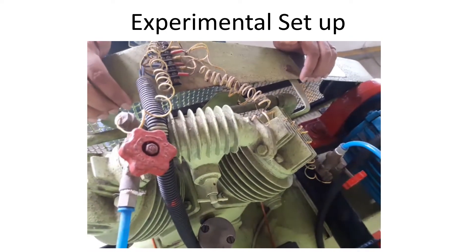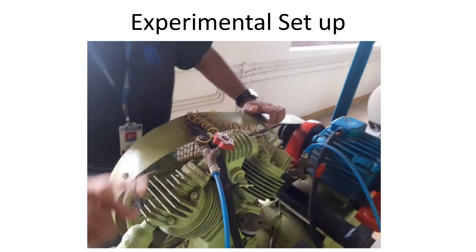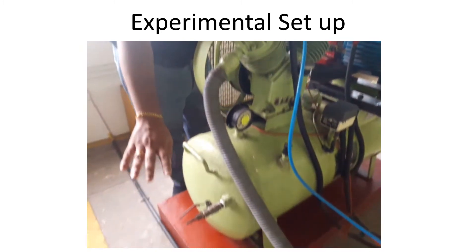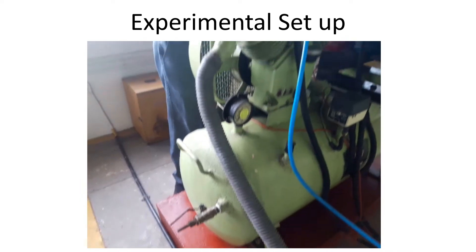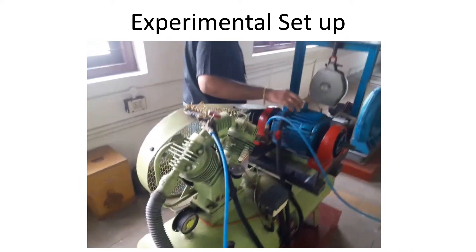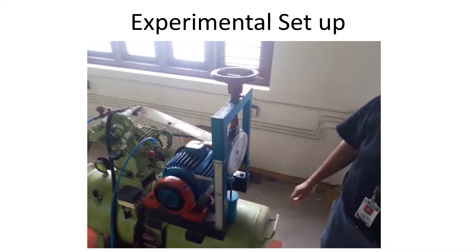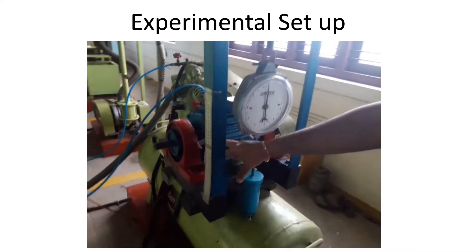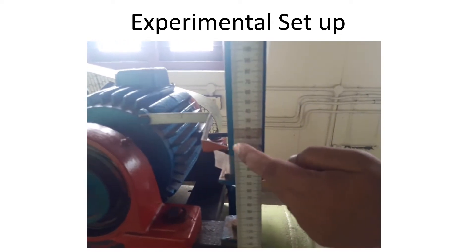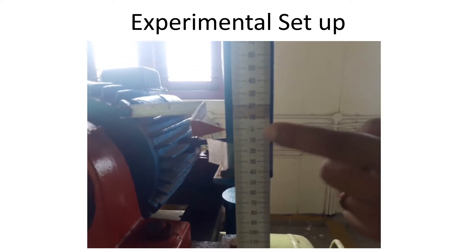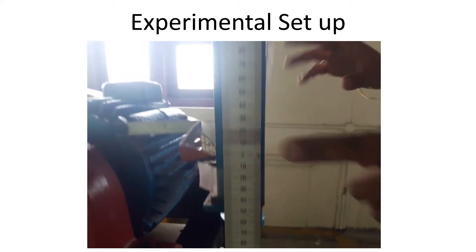Let's see what you have to take care of while starting this experiment. Initially, the delivery valve should be completely open. Next, regarding the motor — we are using a swinging arm motor, and you have to ensure that this arm is at the zero position. The spring balance should also read zero.